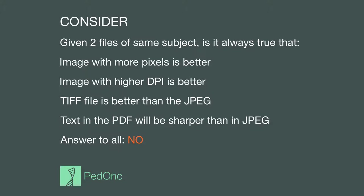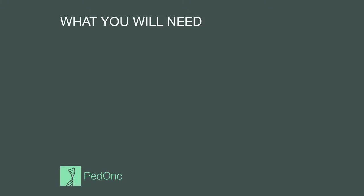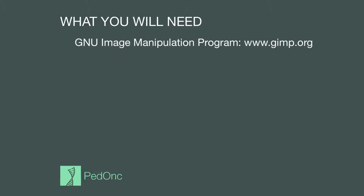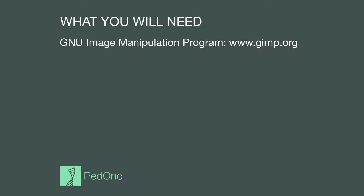I'll indicate when I'm doing things the wrong way — for those parts it's best not to replicate what I'm doing on your own computer. I'll also go through editing the right way, and for those portions I invite you to follow along. For this session we'll be using the GNU Image Manipulation Program, which can be downloaded from www.gimp.org, and OpenOffice Draw, part of the OpenOffice suite downloadable from www.openoffice.org. If you already have these programs installed, you should not need to install any additional software.